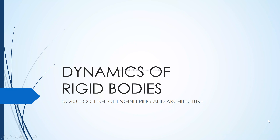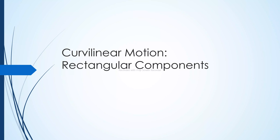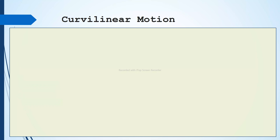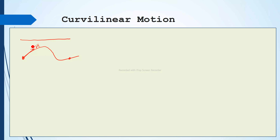Good day future engineers, welcome again to our discussion on dynamics of rigid bodies. The topic for this discussion will be on curvilinear motion and we'll be talking about the rectangular components. A particle is not only moving along a straight line or in a rectilinear path — a particle also moves along a curved path, that's why we call it curvilinear motion. Last time, we discussed the normal and tangential components of a particle moving in curved motion, including tangential velocity, tangential acceleration, and normal acceleration.